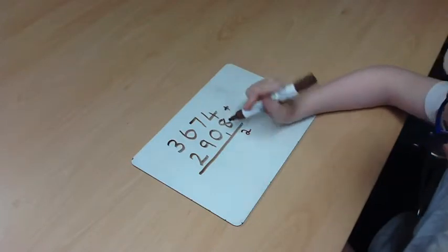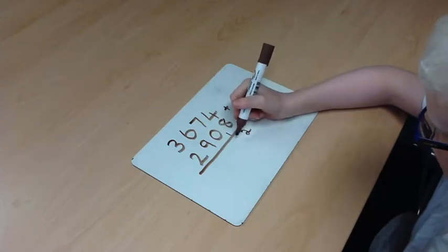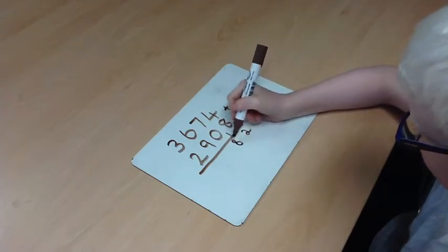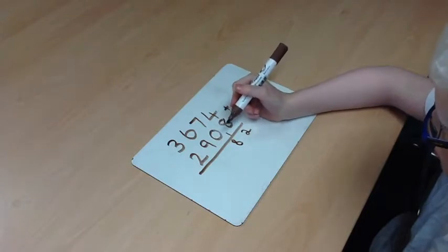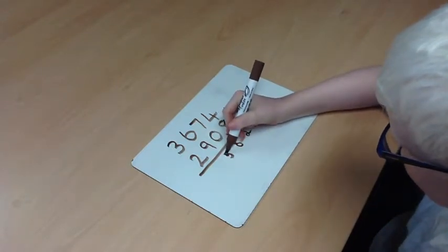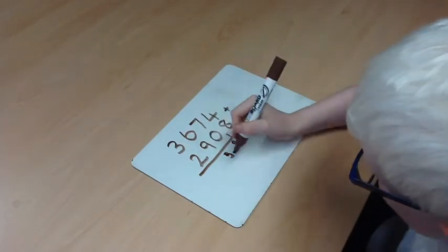7 add 0 is just 7, but because you've carried the 1 you need to add that on which makes it 8. 9 add 6 is 15, so you write the 5 down like in the 1s and then you carry the 1.